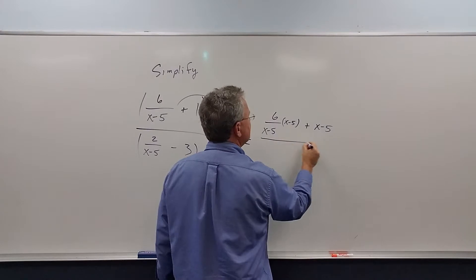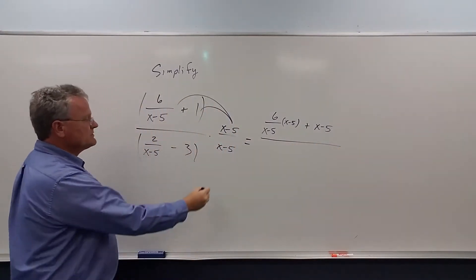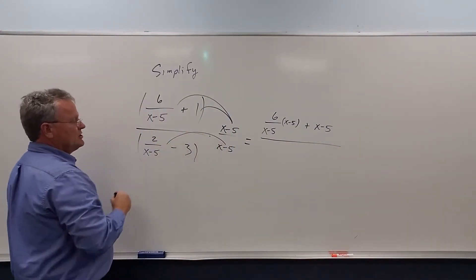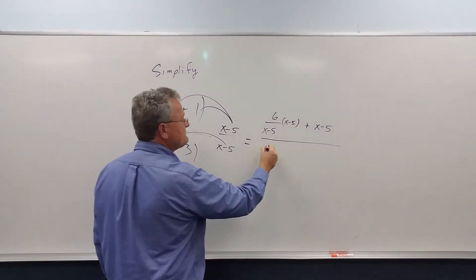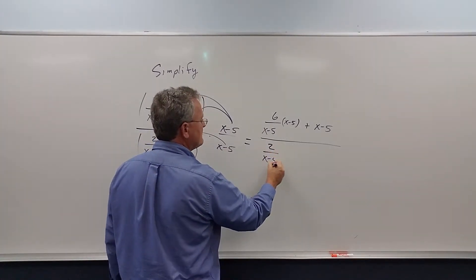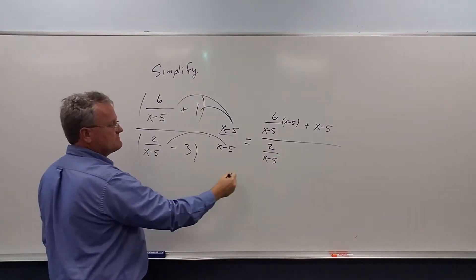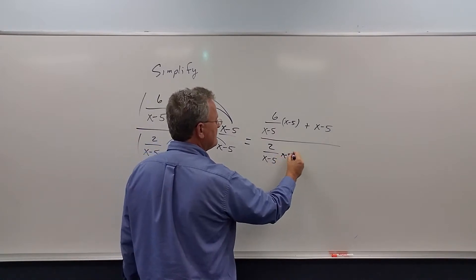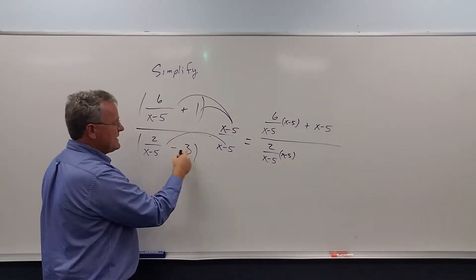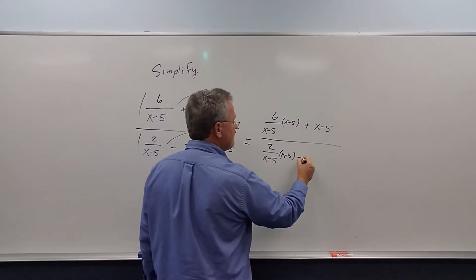Similarly, distributing here we get 2 over x minus 5 times x minus 5, minus 3 times x minus 5.